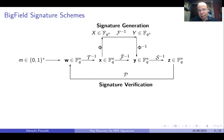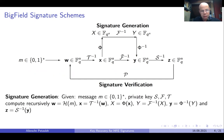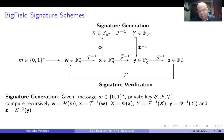On this slide, you see a graphical illustration of the general workflow of multivariate big field signature schemes. For signature generation, we are given a message m as a string of arbitrary length and the private key consisting of the three maps S, f, and T. We first compute the hash value w of the message m. Then we invert the first affine map T to get x, lift x to the extension field, and invert the univariate central map to get y in F_q^n. Finally, we move the result down to the vector space again and invert the second affine map S to get the signature in F_q^n.